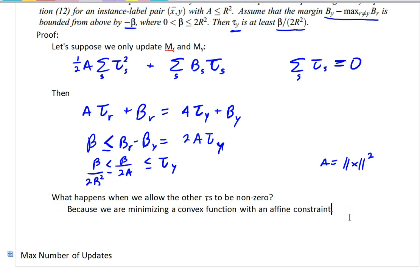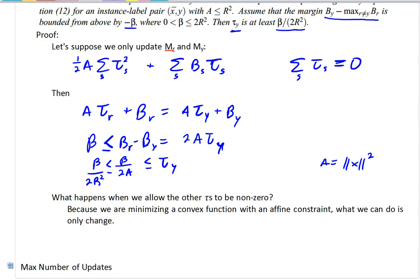So, we've got a convex function with an affine constraint. What we can do is only change two taus at a time. So in this case...